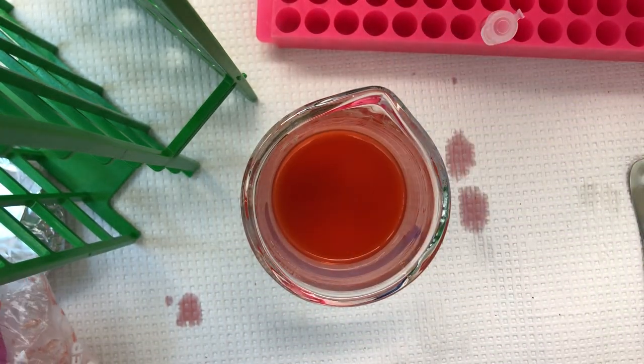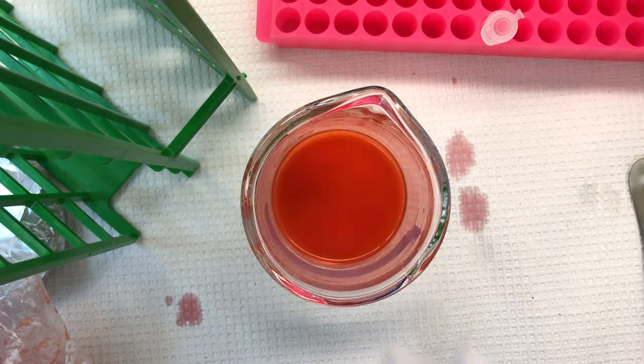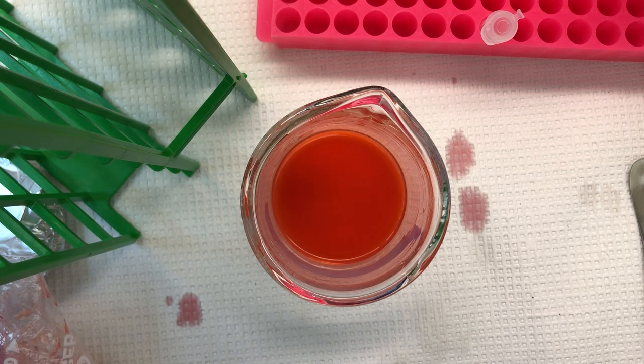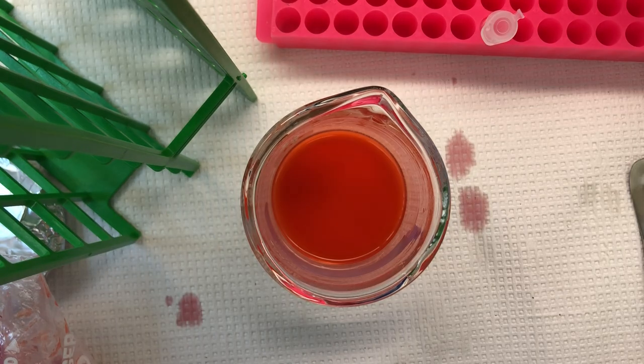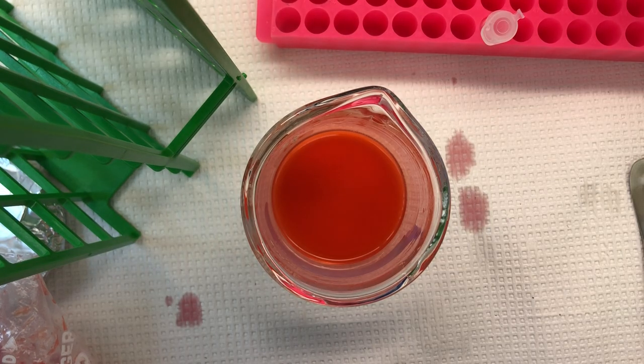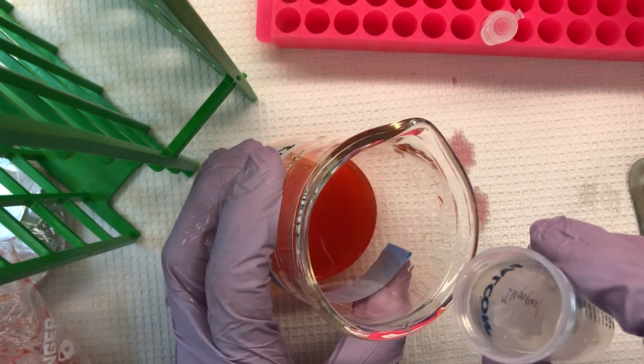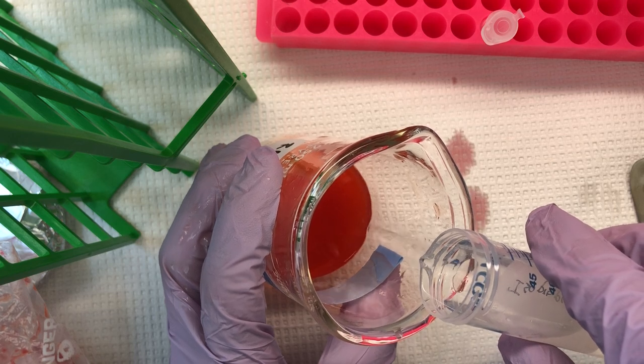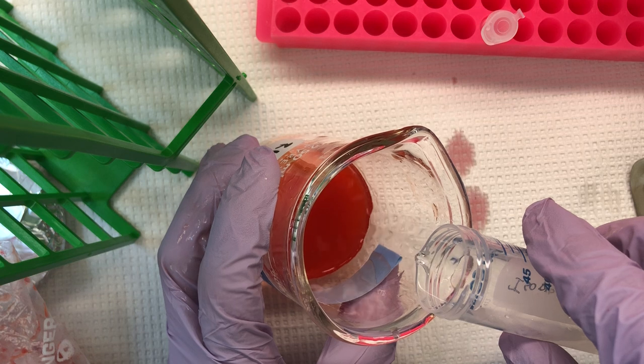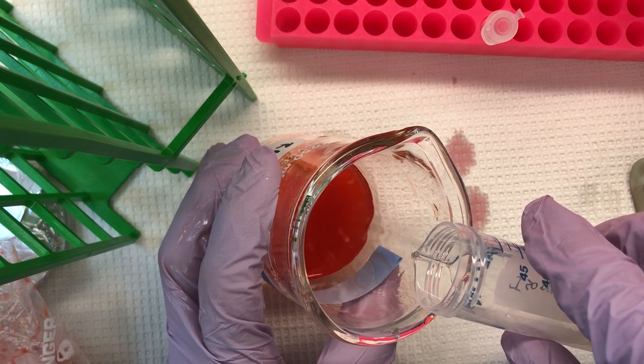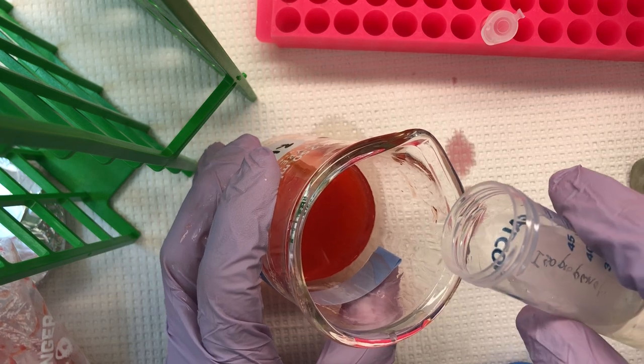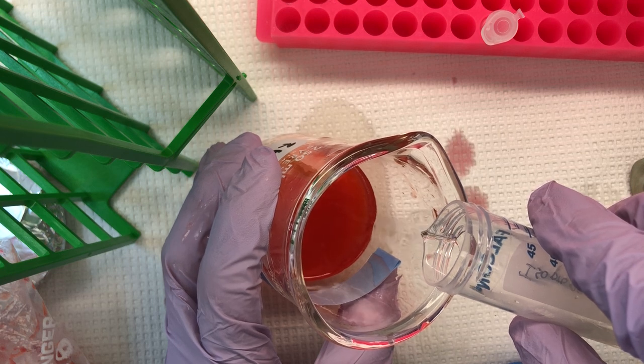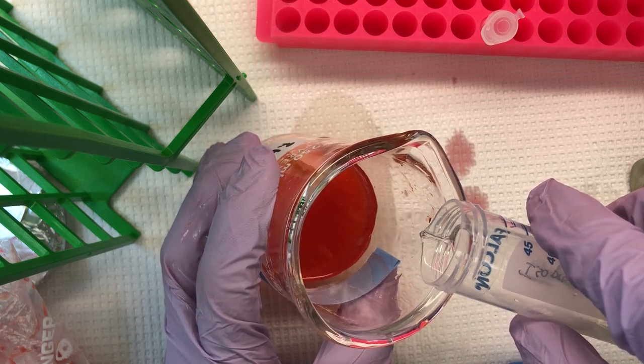And we're going to add ice cold isopropanol. So I've been keeping this on a bucket of ice. And the trick is to layer it on very gently without disturbing the layer. I'm looking for a cloudy white precipitate, which is the DNA. I'm starting to see a little bit of that.